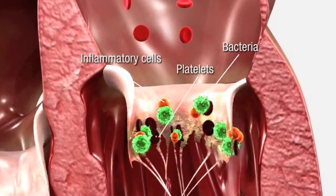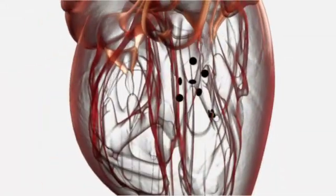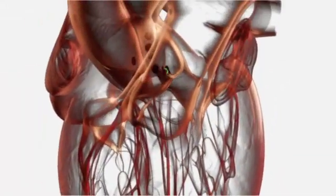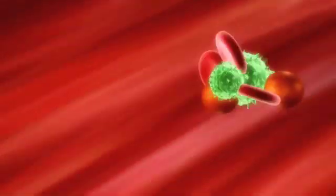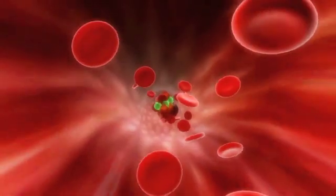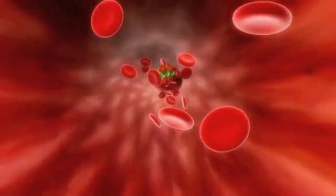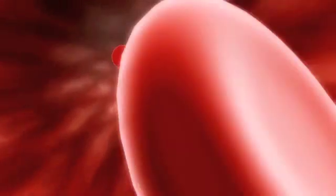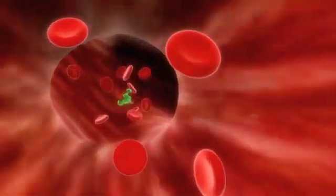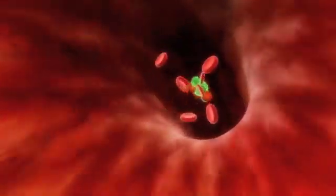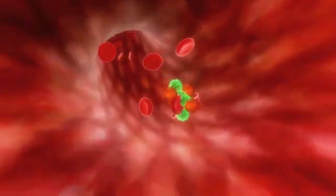However, the inflammatory response inadvertently damages the valvular tissue. The bacterial vegetation and inflammation result in damage to the shape, structure, and function of the valves, which may become stenotic or incompetent. Parts of the bacterial vegetation can break off, travel through the circulation, and deposit in a distant organ causing damage — these are called septic emboli.